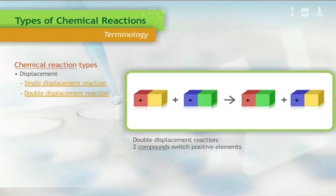In a double displacement reaction, two compounds are added together and the positive elements from each compound switch places with each other, forming two new compounds. Here is what it looks like with our colored block example. The positive elements from each compound switched places with each other.